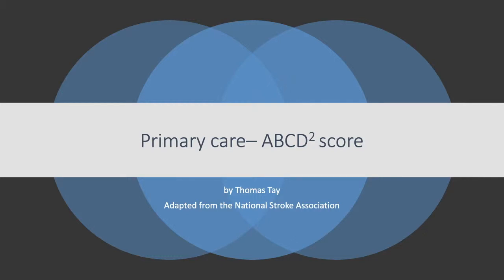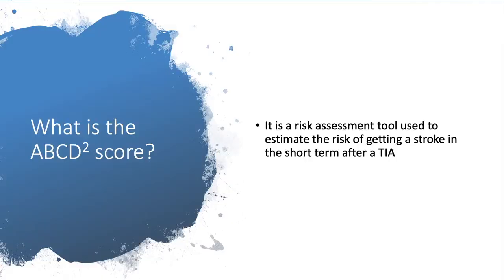Hello everyone, today we'll be looking at the ABCD2 score. So what is the ABCD2 score? It's a risk assessment tool used to estimate the risk of getting a stroke in the short term after a TIA.